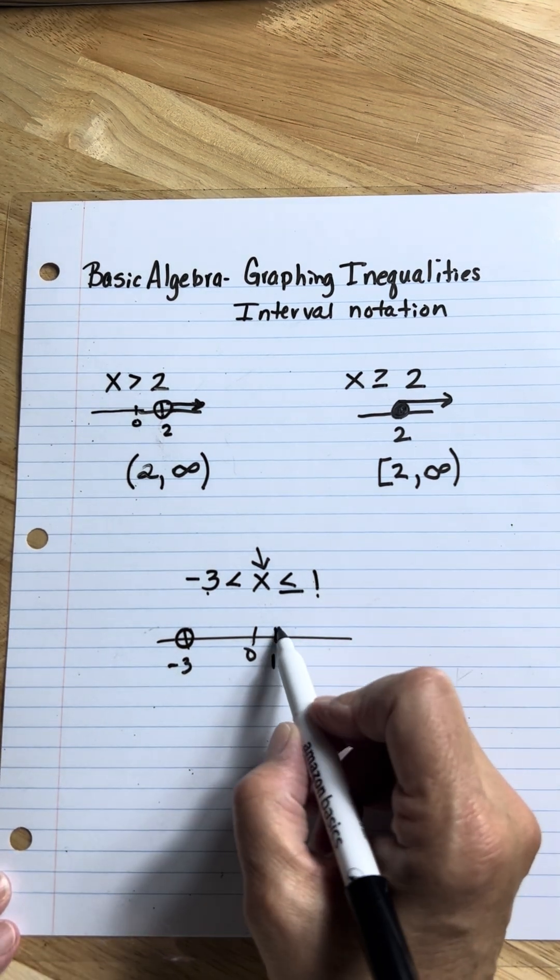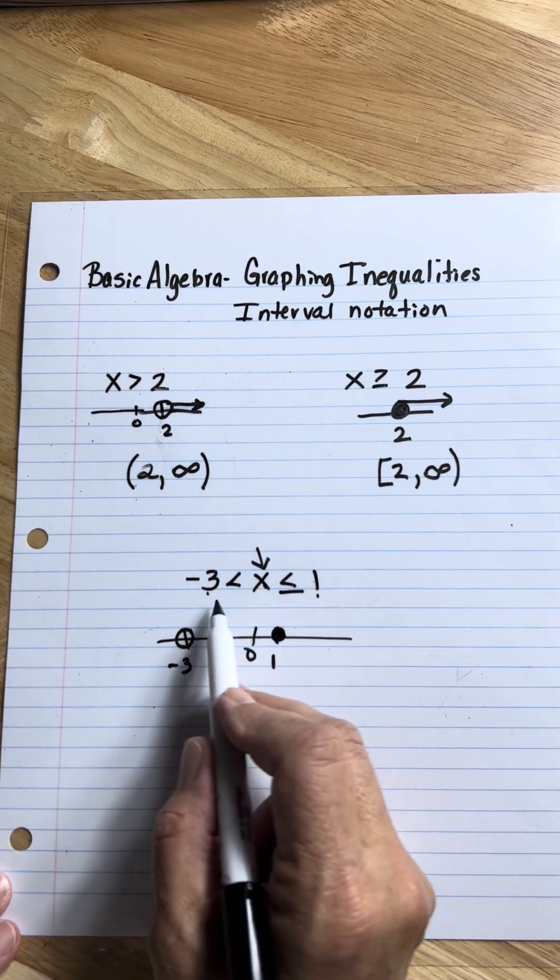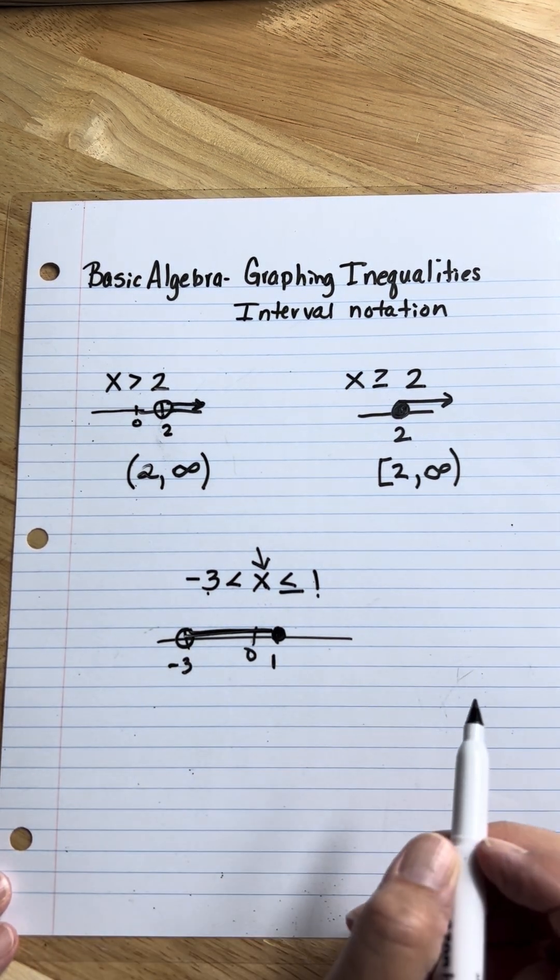Down here, I have less than or equal to, so that's going to be a closed dot. And since x is all the numbers in between these, I would just draw a line.